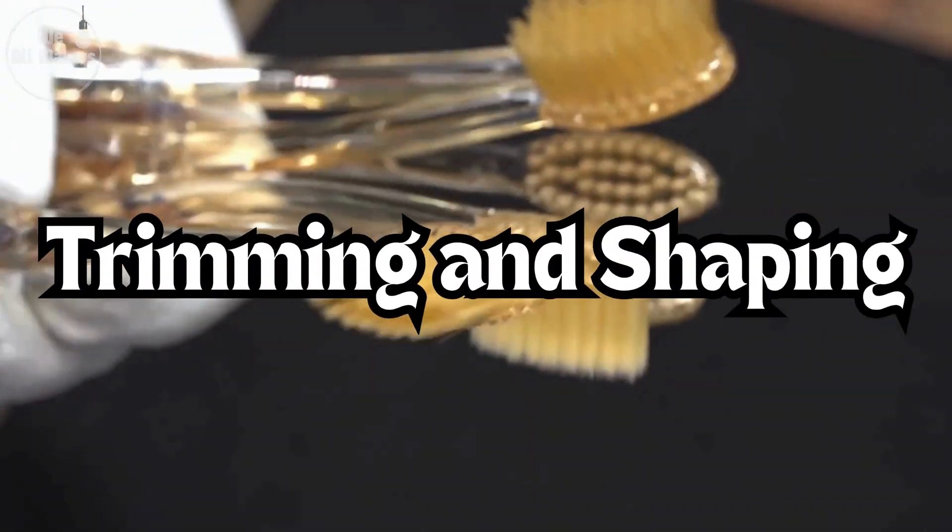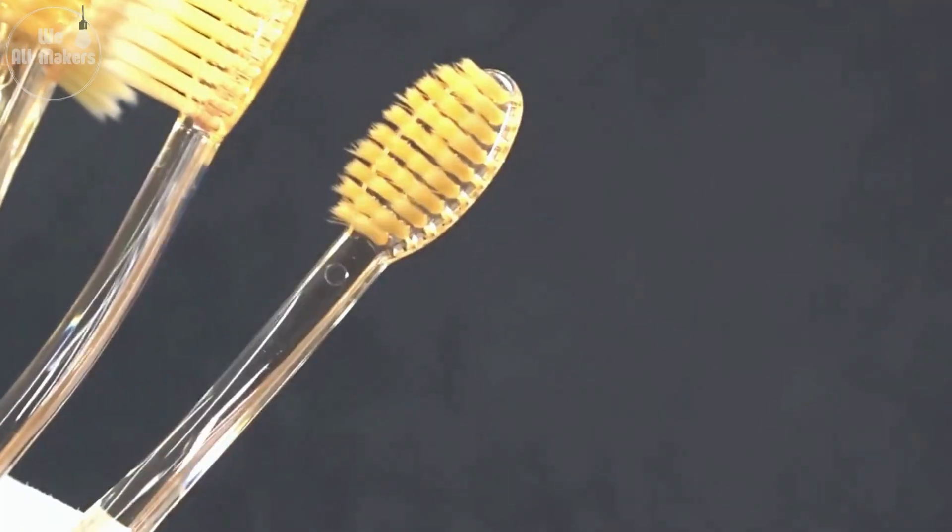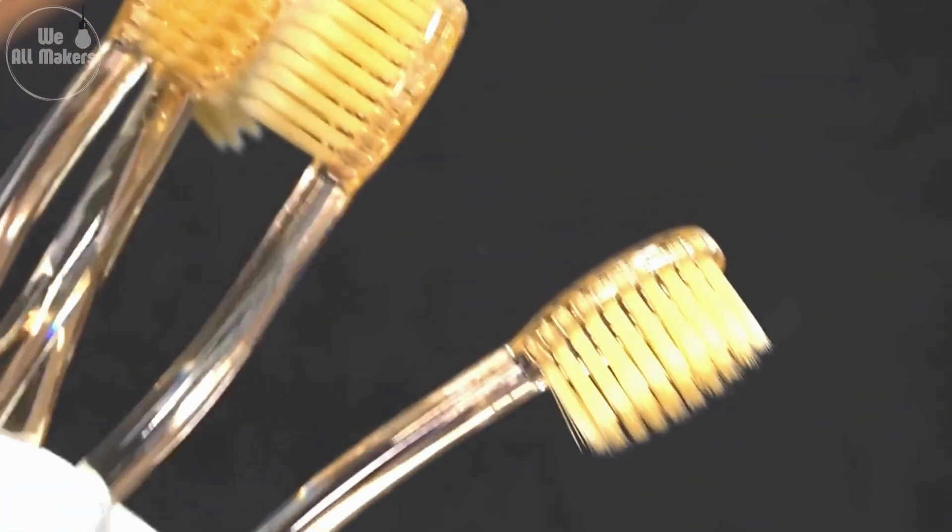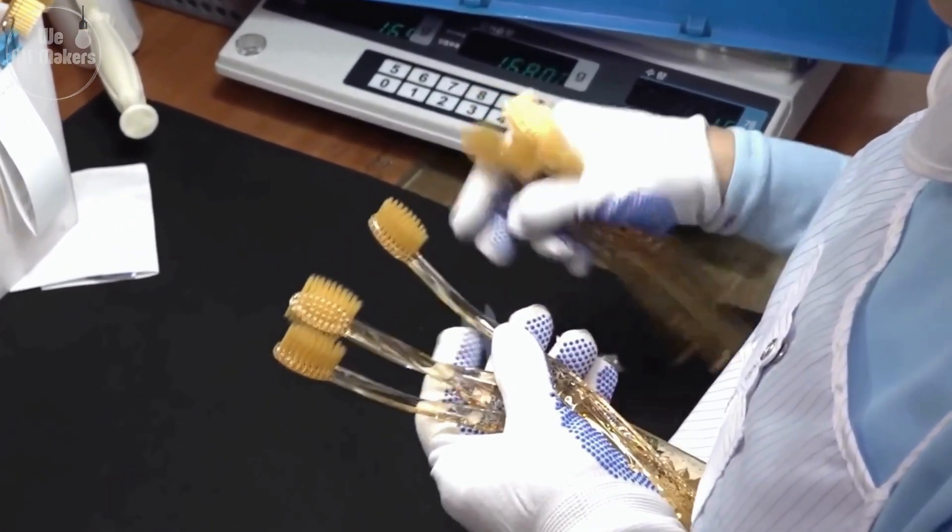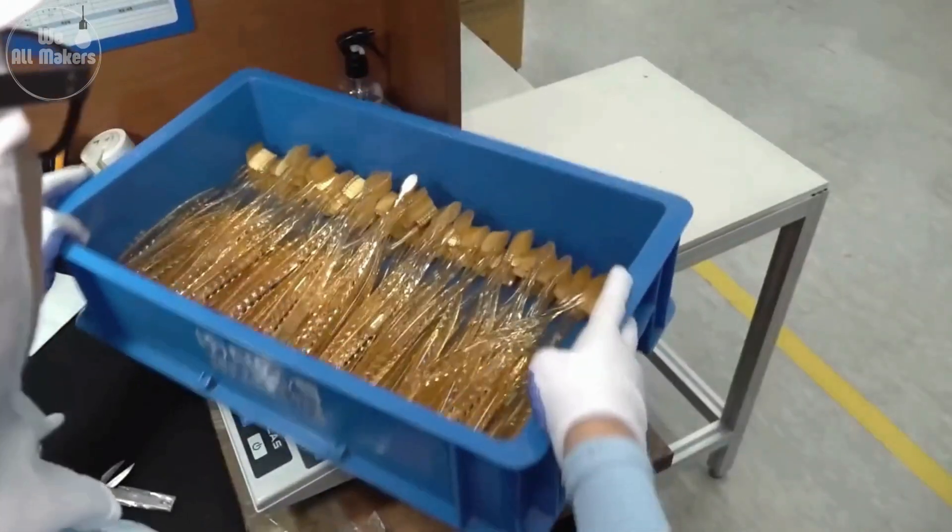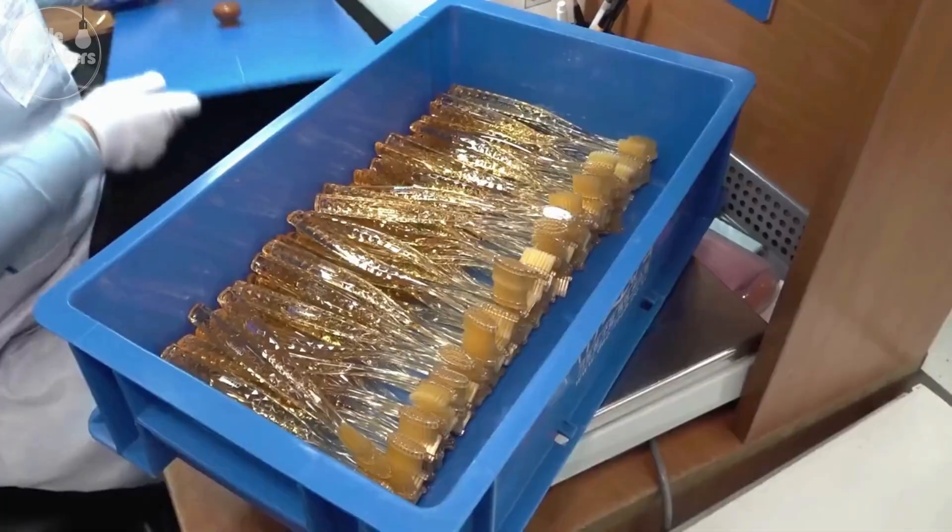Step 5: Trimming and shaping. Once the bristles are in place, they're trimmed to the right length and sometimes shaped into specific patterns. This step is all about making sure the toothbrush can reach every corner of your mouth effectively. Whether it's a wave shape or a dome, the design helps you get that perfect clean.